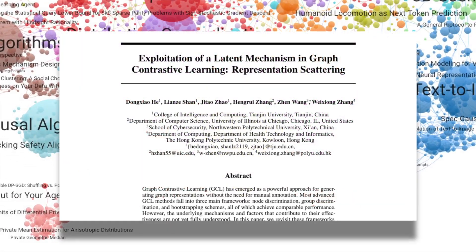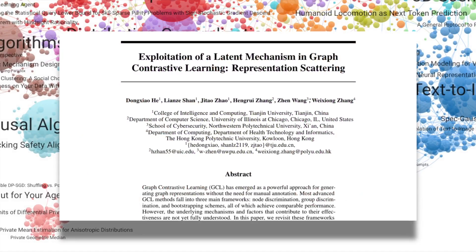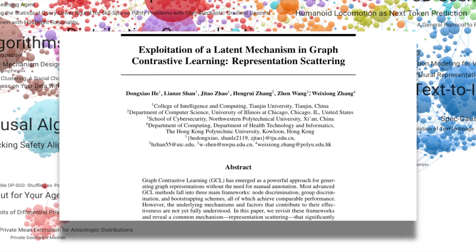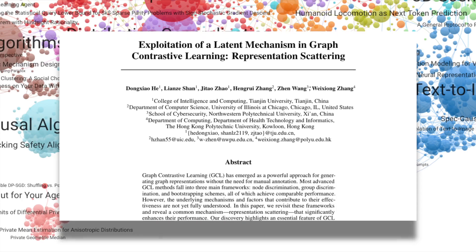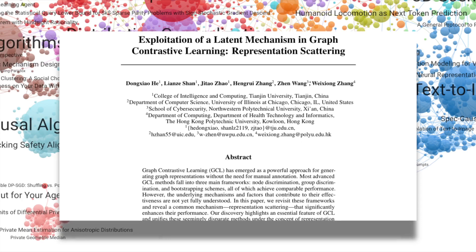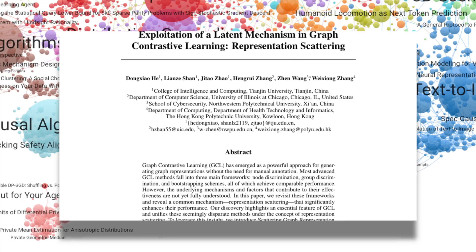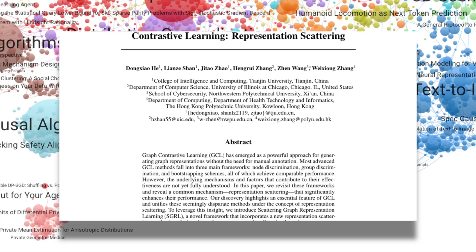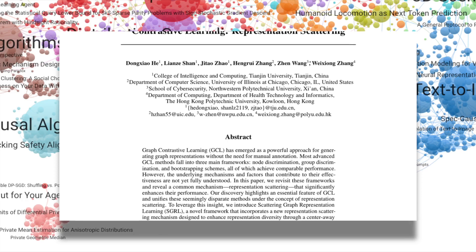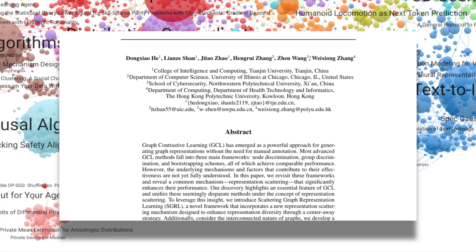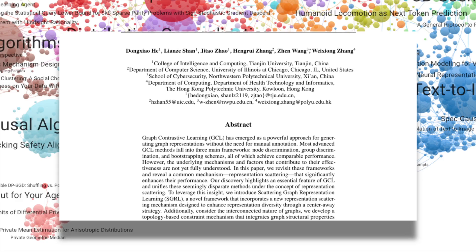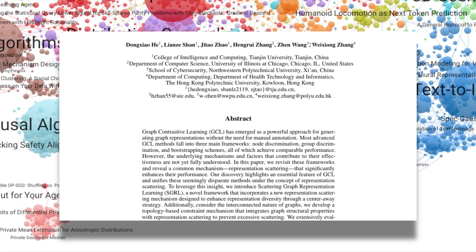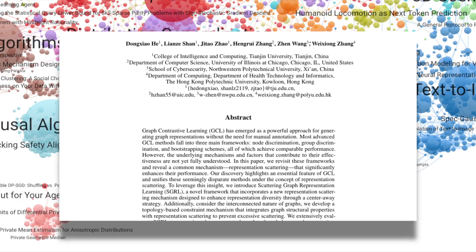Let's kick things off with this paper on graph neural networks, which earned the highest review scores of the conference. The authors identify a unifying mechanism called representation scattering that enhances various contrastive learning algorithms. They propose a new framework that combines this scattering mechanism with a topology-based constraint to improve representation diversity and prevent over-scattering. Their benchmarks show state-of-the-art performance, solidifying this as a milestone in graph learning.